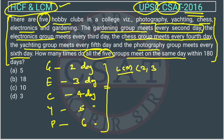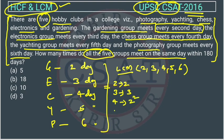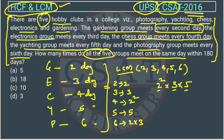We have to find the LCM of 2, 3, 4, 5, and 6. Using the factorization method: the factor of 2 is 2, factor of 3 is 3, factor of 4 is 2², factor of 5 is 5, and factor of 6 is 2 × 3. The LCM will be 2² × 3 × 5, taking the highest power of each. This comes to 60.